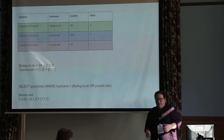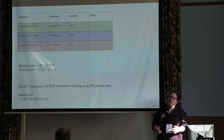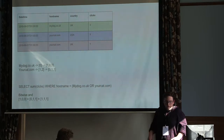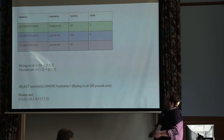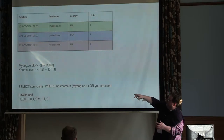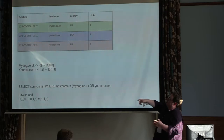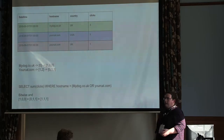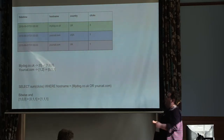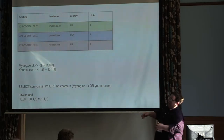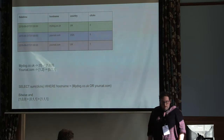When we ingest this data, for dimensions which are strings we can build an inverted index — this is where we get inspiration from search engines and Elasticsearch listing indexes. We take each value present in the column and build an index out of it. mydog.co.uk is only present in the first row, so its index is 1, 0, 0. yourcat.com is only present in the second and third rows, so its index is 0, 1, 1. That means we can filter things really fast. When I ask Druid 'give me the total clicks where hostname is mydog.co.uk or yourcat.com', it's just a matter of doing a bitwise AND on those two indexes. So Druid only needs to aggregate the rows that apply to the filters — we can do those kinds of things super quickly.